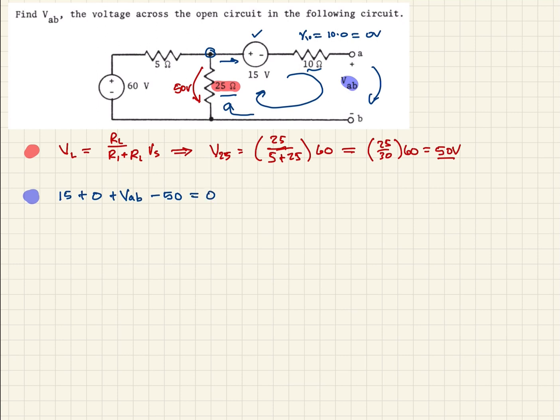So now, if we solve for our VAB, we add 50 to both sides, and we subtract 15 from both sides. And then what we are left with, then, is the VAB is equal to 35 volts. So what this means, then, is if you were to come and apply a volt meter to this circuit, what you would read is 35 volts across those terminals.